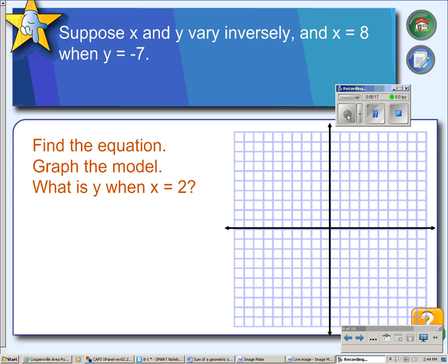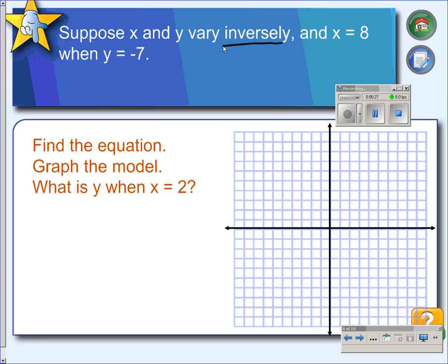Suppose x and y vary inversely, and x equals 8 when y equals negative 7. Find the equation. First thing we can do is, noticing that it's inversely related, we know that our equation will look like y equals k over x. We also know that we can calculate k by multiplying x times y.